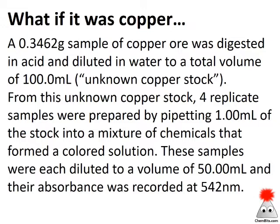So if we take a 0.3462 gram sample of copper ore and digest it in acid, diluting in water to 100 milliliters of total volume, that's pretty much the same process you're using for your iron ore. We're going to make a solution that I'm going to call the unknown copper stock. If we take that unknown copper stock and make four replicate samples by pipetting one milliliter of that stock into some mixture of chemicals that forms colored solution and then diluting to 50 milliliters, we can read those at 542 nanometers and determine their absorbance.